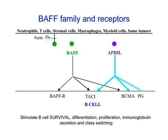BAF and APRIL are members of the TNF family of cytokines, and they're synthesized by a number of cells, including neutrophils, macrophages, monocytes, and even some tumors. BAF is made as a cell surface expressed molecule that's cleaved by a furin-like enzyme to yield a soluble product, and about 90% of all BAF is found as the circulating form. APRIL is made only as a soluble molecule.